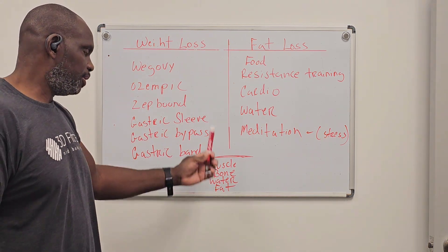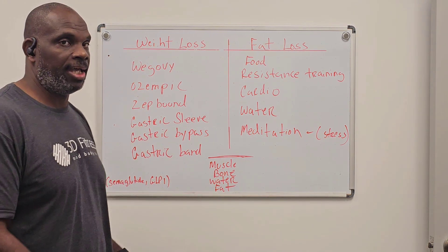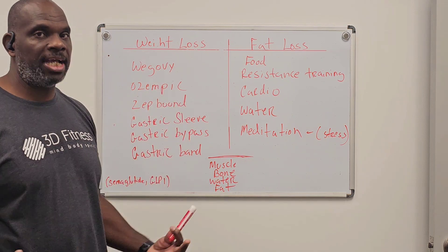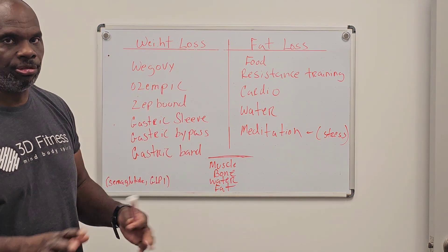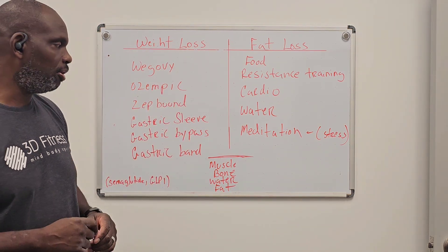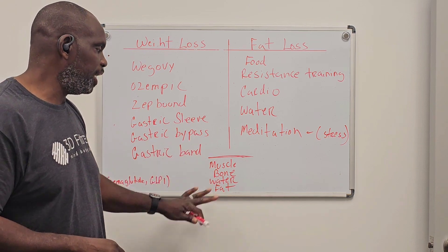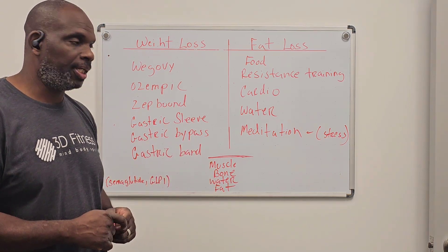In essence, weight is going to be bone, muscle, water, fat. That's pretty much weight. That's the mass of your body. There's other little details too, like ligaments, tendons, and all that. But we're talking about pretty much the mass of your body is muscle, bone, water, fat.